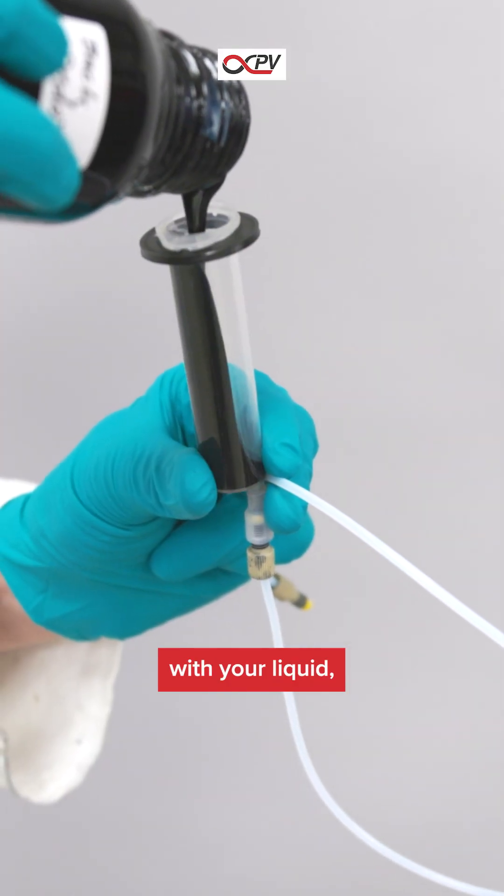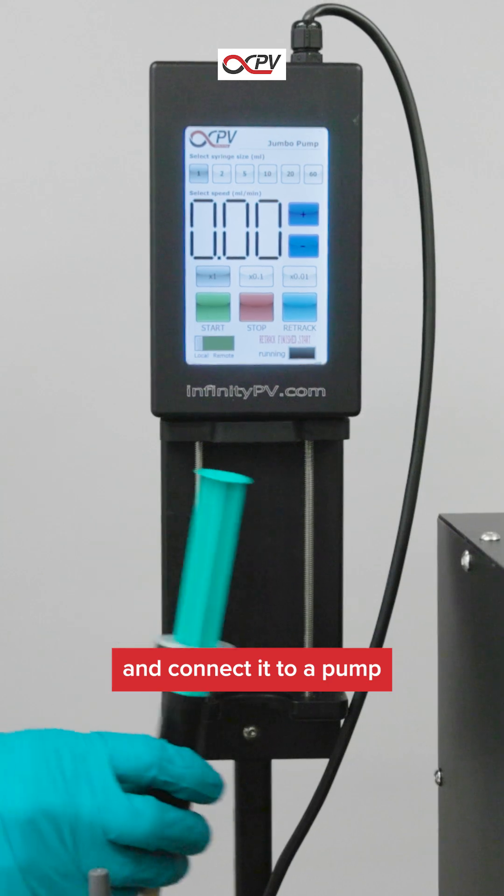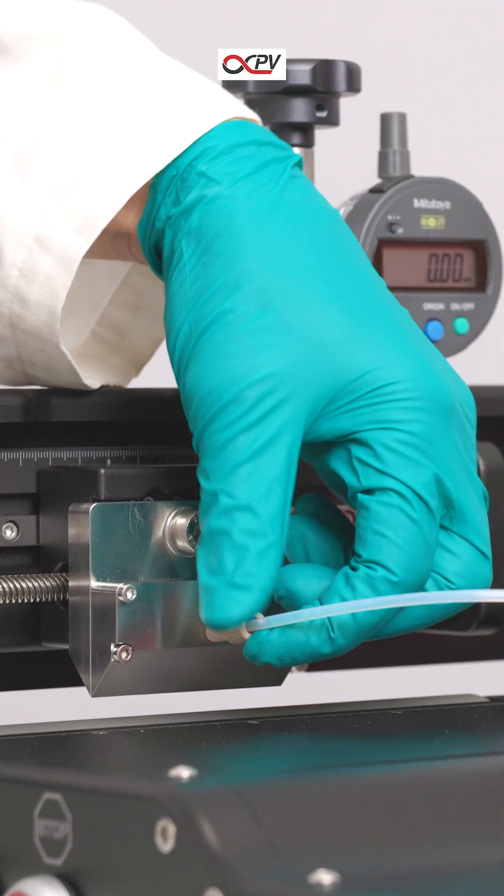You fill a syringe with your liquid, often called ink, and connect it to a pump and the slot die head.